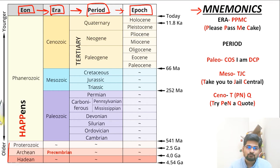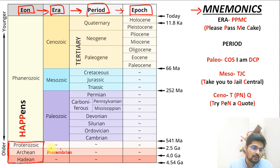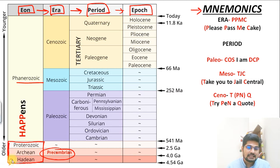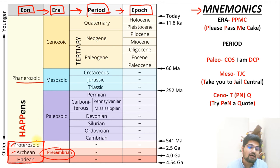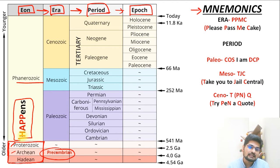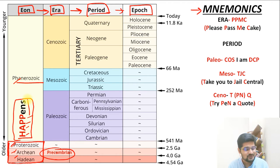The oldest division of geological history is the eon. The earliest three eons — Hadean, Archean, and Proterozoic — together form the Precambrian. These are followed by the Phanerozoic eon. To remember all four eons, use the mnemonic 'HAPPENS': H for Hadean, A for Archean, PP for Proterozoic and Phanerozoic, with ENS added to complete the word. So 'HAPPENS' covers all four eons in sequence.